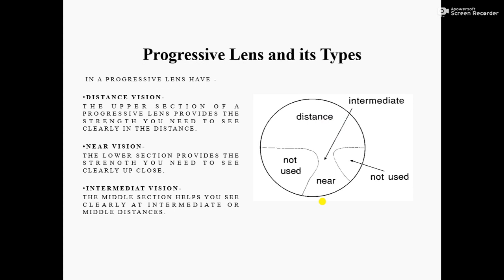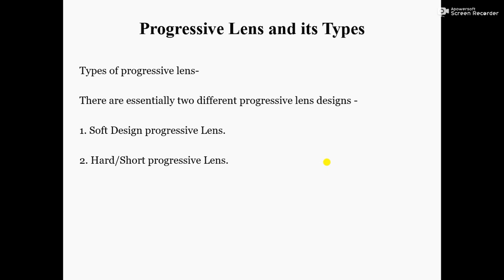A progressive lens has three parts. Number one: distance vision — the upper section provides the strength you need to see clearly in the distance. Number two: near vision — the lower section provides the strength you need to see clearly up close. Number three: intermediate portion — the middle section helps you see clearly at intermediate or middle distances.